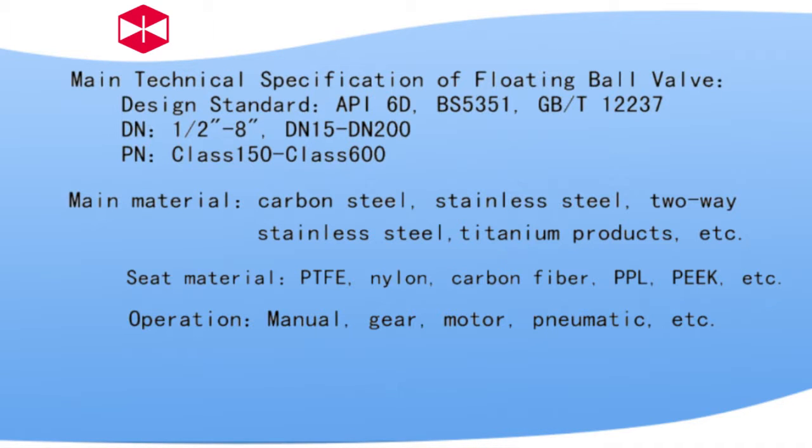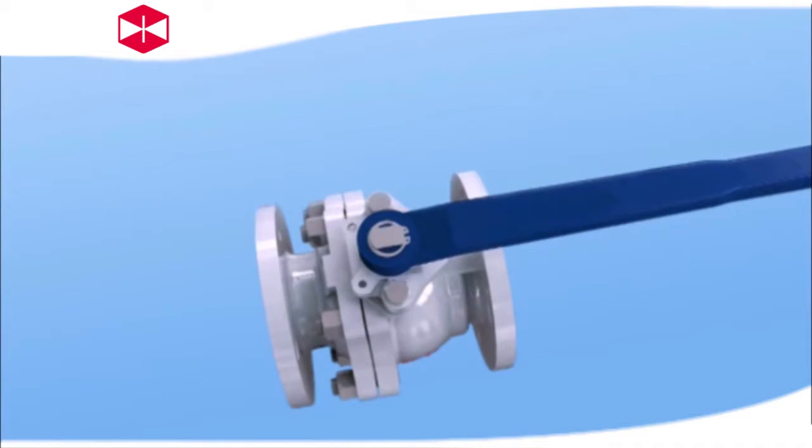Seat material: PTFE, nylon, carbon fiber, PPL, PEEK, etc. Actuation: manual, gear, motor, pneumatic, etc. The structure characteristics of floating ball valves made by VARC are as follows.